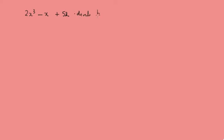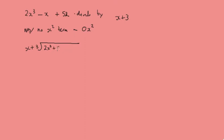So we're going to do 2x³ minus x plus 52, divided by x plus 3. Now let's note here: there's no x² term, but we're going to add it in as 0x², so we set it up as 2x³ plus 0x² minus x plus 52, with x plus 3 as our divisor.